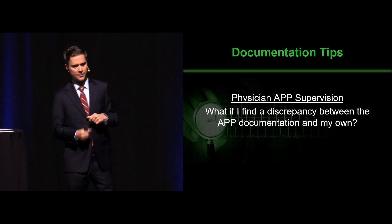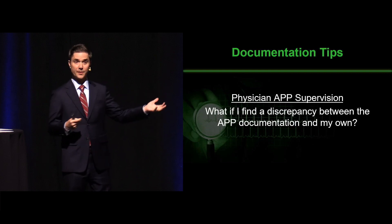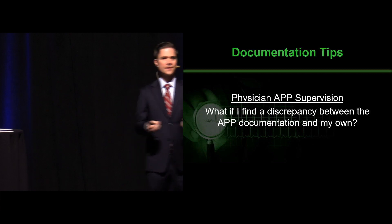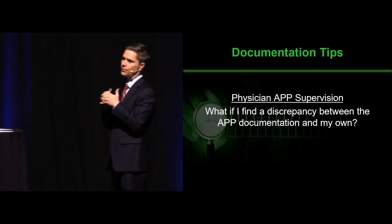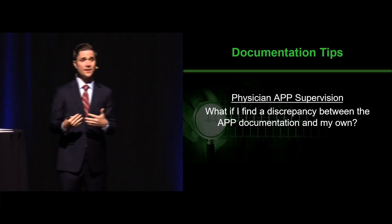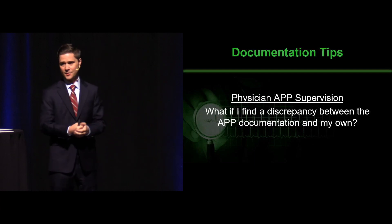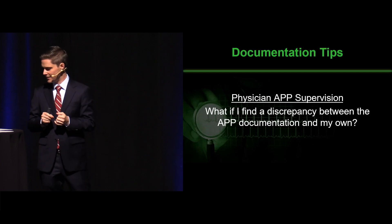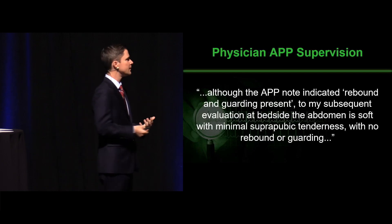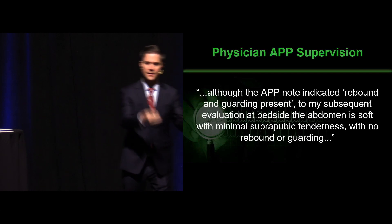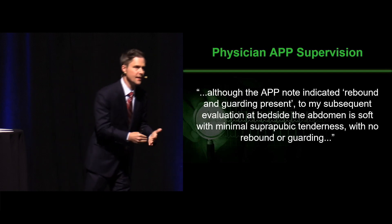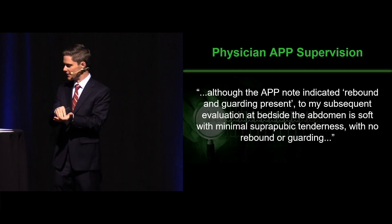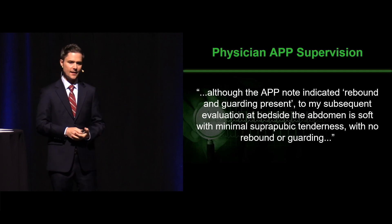What if you find a discrepancy between you and the APP? The same guidelines hold: be objective, but control your narrative. Maybe what you see was not apparent earlier, or maybe you just disagree. You've got to address it — the discrepancy is the problem, and addressing it is how you fix it. Be professional, be objective. A great example: 'They noted this; my subsequent evaluation, I'm noting this' — and as Ross says, 'at this time.' Maybe things have changed. Documenting it objectively like that is the way to go.